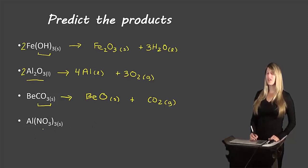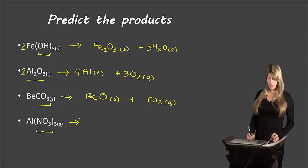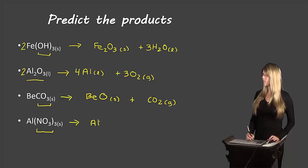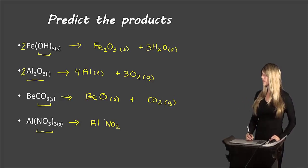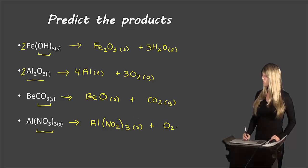The last example is aluminum nitrate. We're dealing with the decomposition of a nitrate, which gives a metal nitrite and oxygen gas. Aluminum has a 3+ charge and nitrite (NO₂) has a 1− charge; crossing over gives Al(NO₂)₃ in the solid state, plus O₂ as a gas.